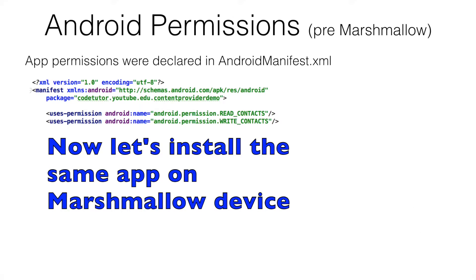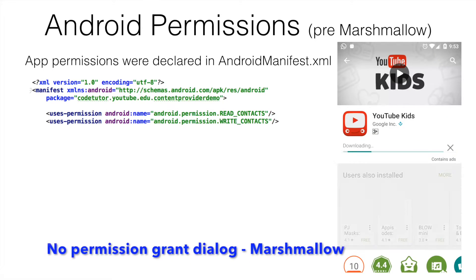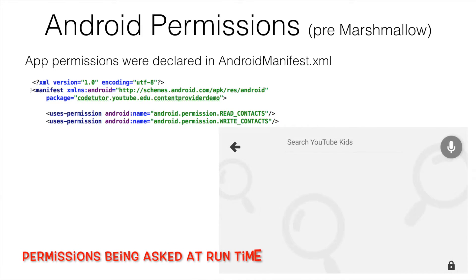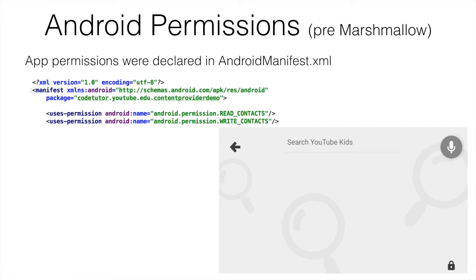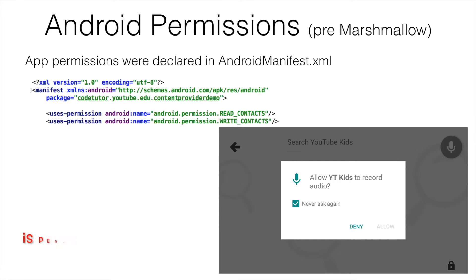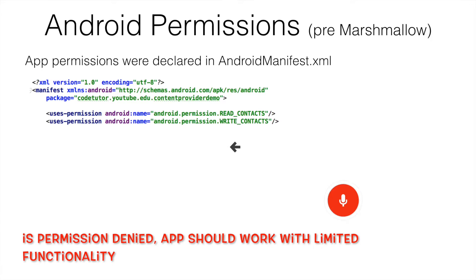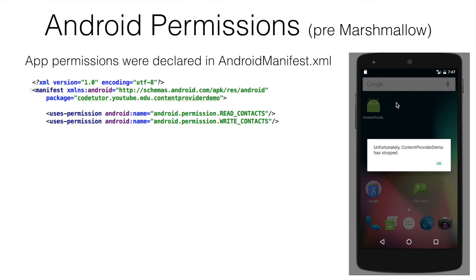If we try to install the same application on a Marshmallow device with target SDK version 23, it will automatically start installing without asking for any permission. But at runtime, it will start popping up windows asking for runtime permissions. That is the difference between pre-Marshmallow and post-Marshmallow. Runtime permissions have been introduced from Marshmallow onwards, and that is why you have to write the application with runtime permissions included. Because we had not implemented the runtime permissions in our app, the app was failing.